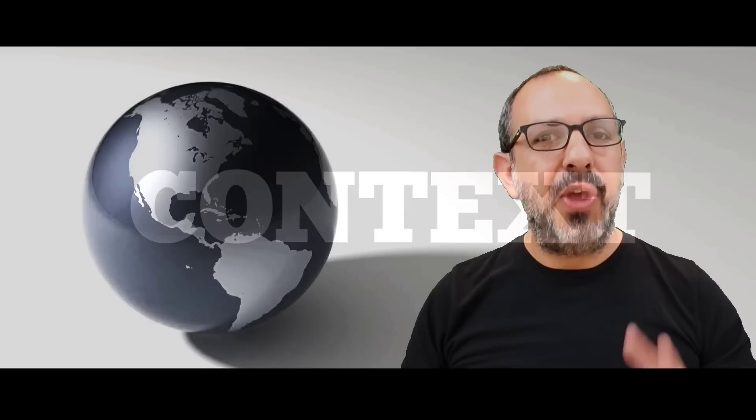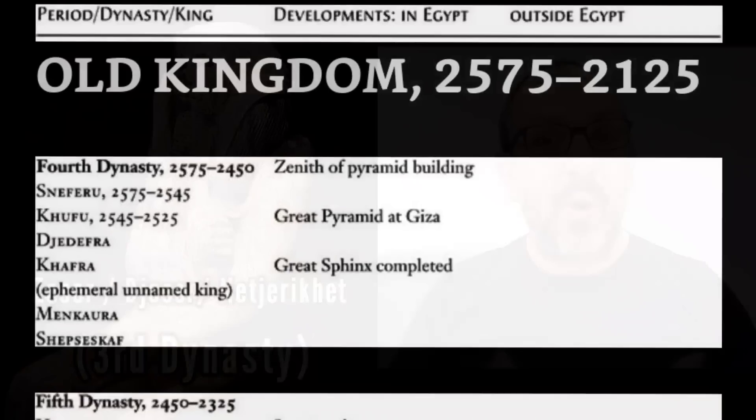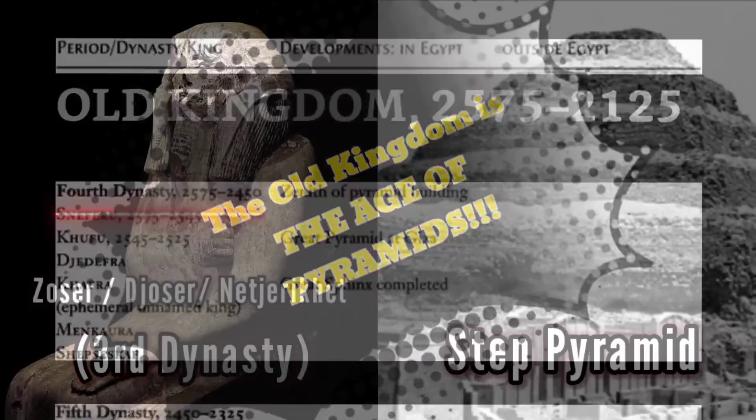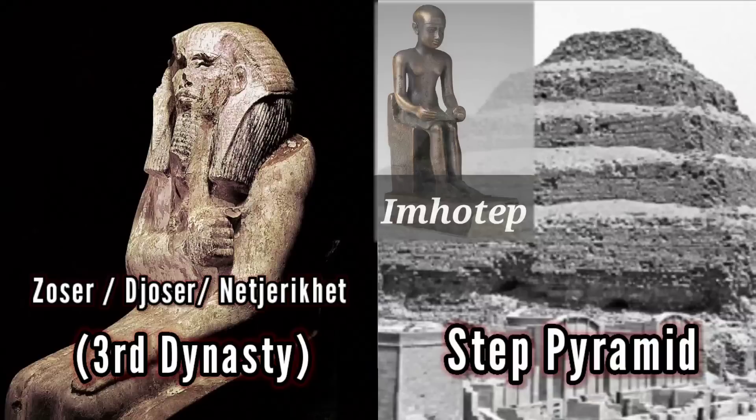The Old Kingdom started with Zoser as the first pharaoh of the third dynasty. Some would say the Old Kingdom started with the fourth dynasty, but this era has been called the Age of Pyramids, so I want to include Zoser's Step Pyramid. It's not a true pyramid yet as you can see, but because of it and its genius architect Imhotep, we're a step closer to building actual pyramids.